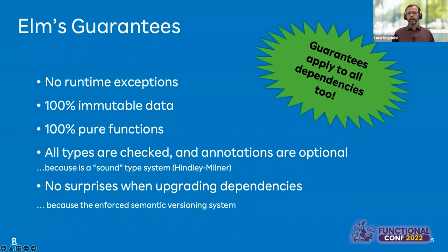What we liked about Elm were mainly the guarantees: no runtime errors, 100% immutable data, 100% pure functions, and that all types are correct — but at the same time, type annotations are completely optional. Also, Elm guarantees that there will be no surprises when upgrading dependencies, thanks to the enforced semantic versioning system. Those characteristics also protect the project from the typical issues of NPM, the node packaging system.